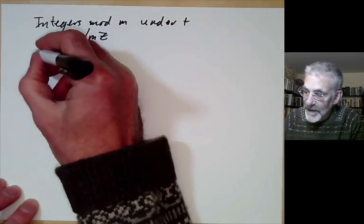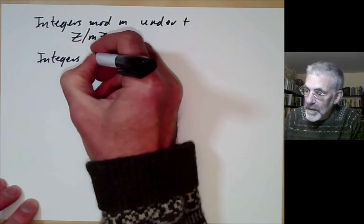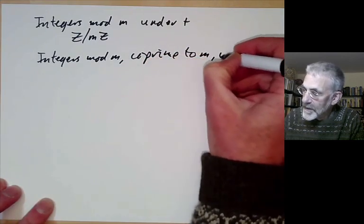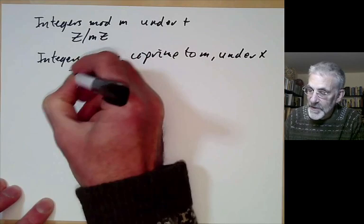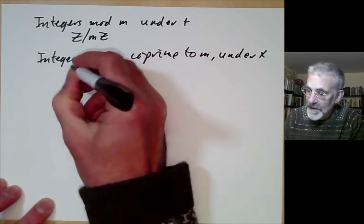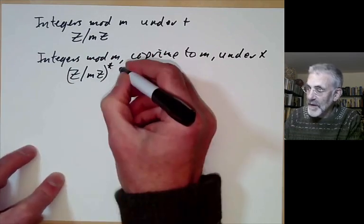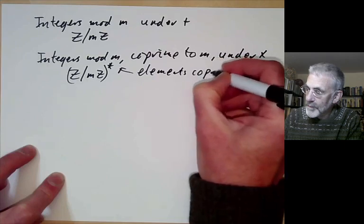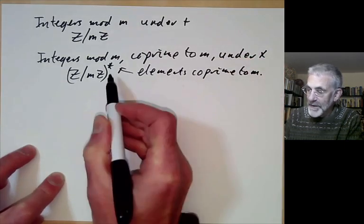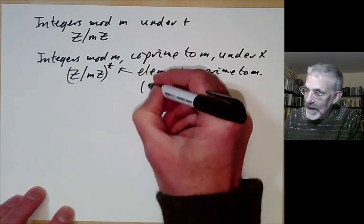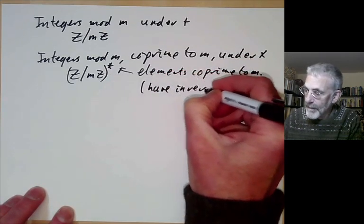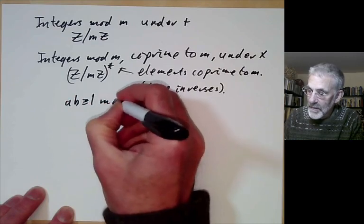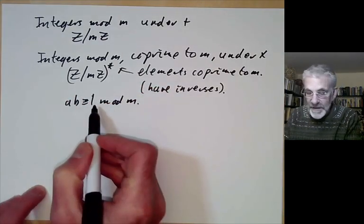The second sort of group we've had is the integers modulo m that are co-prime to m, under multiplication. This group is usually denoted by Z modulo mZ with a star, to mean we're taking the elements co-prime to m. The point is that the elements co-prime to m all have inverses — this is like solving ab congruent to 1 modulo m, which we can solve provided a is co-prime to m.